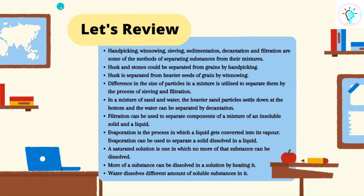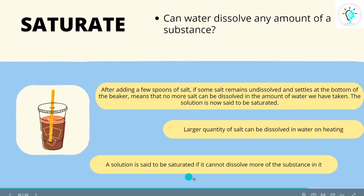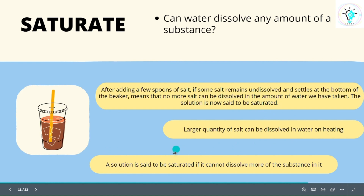Let us look at the process called saturation. Saturation is the amount of substance that water can dissolve. If we add a few spoons of salt to a glass of water, there will be a point at which no more salt can be dissolved — that solution is said to be saturated. However, if we boil the solution, some more salt will dissolve. Heating can increase the saturation of any liquid. A solution is said to be saturated if it cannot dissolve any more of the substance in it.